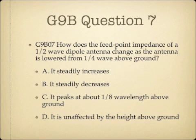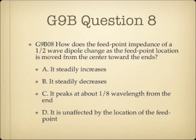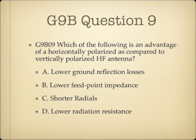Question 7: How does the feed point impedance of a half wave dipole antenna change as the antenna is lowered from a quarter wave above the ground? A. It steadily increases. B. It steadily decreases. C. It peaks at about one eighth wavelength above the ground. Or D. It is unaffected by the location of the feed point. Question 9: Which of the following is an advantage of a horizontally polarized as compared to vertically polarized HF antenna? A. Lower ground reflection losses. B. Lower feed point impedance. C. Shorter radials. Or D. Lower radiation resistance.